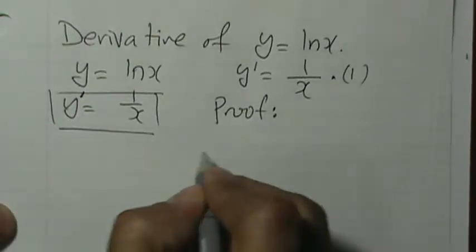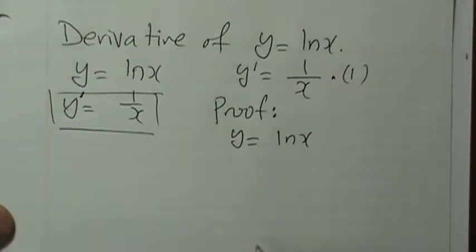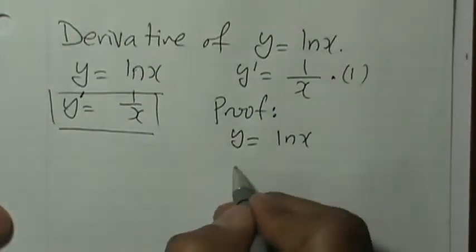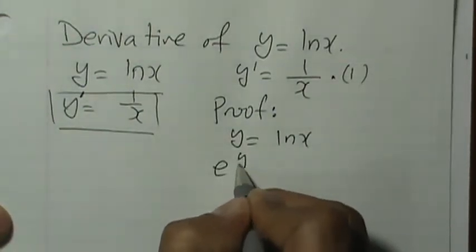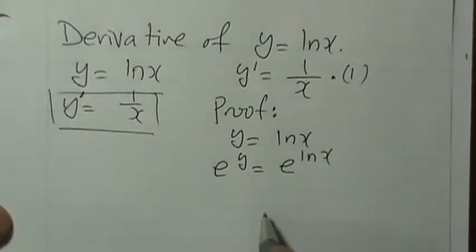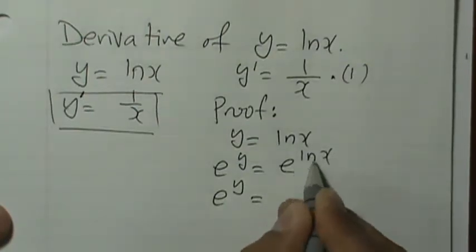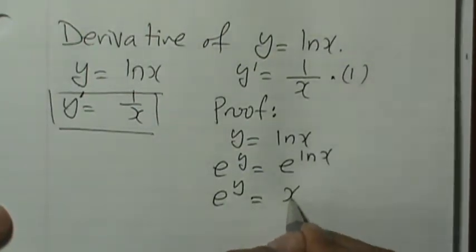So if we have y equals ln x, in order to convert it to the exponential function, we write it as e to the power of y equals e to the power of ln x. And now you should know that e to the power of ln x is the same as x.